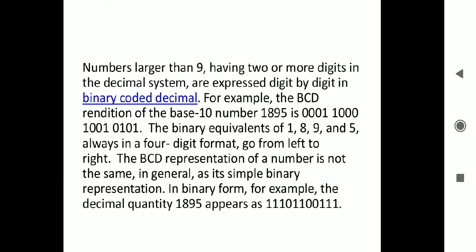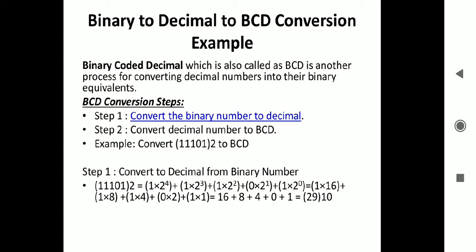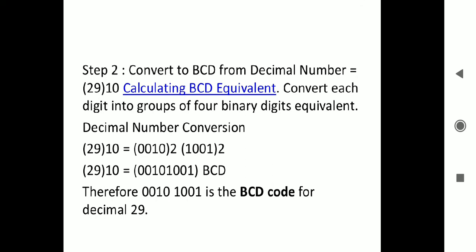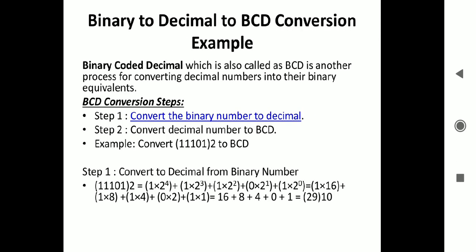Binary coded decimal has to be always remembered. The binary to decimal to BCD conversion example: Binary coded decimal, which is also called BCD, is another process of converting decimal numbers into their binary equivalents. Step 1: Convert the binary number to decimal. Step 2: Convert decimal number to BCD. Example: Convert 11101 binary to BCD. 11101 equals 16 plus 8 plus 4 plus 0 plus 1, which is 29.